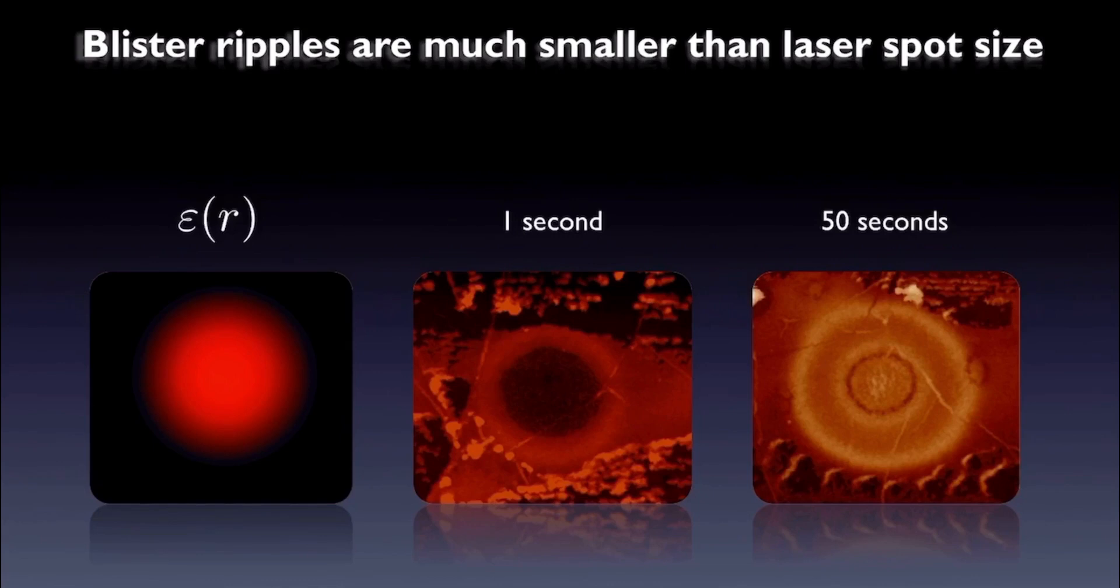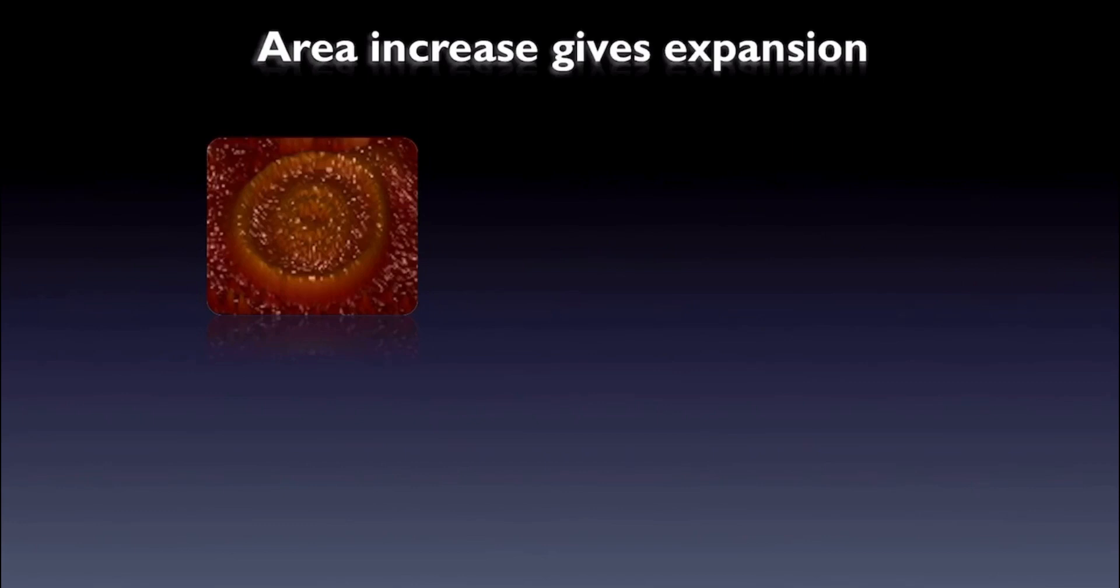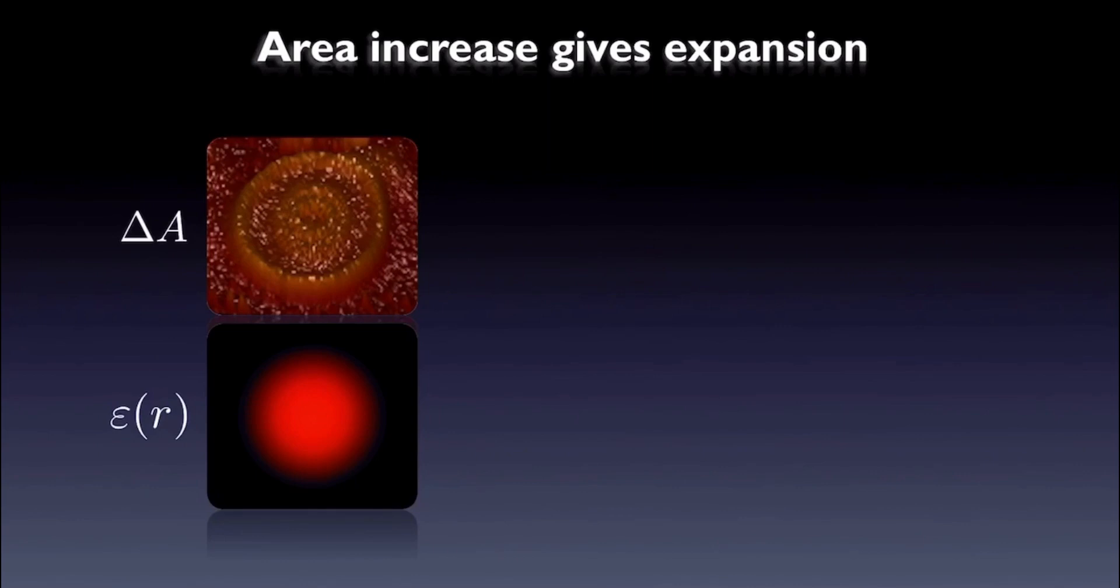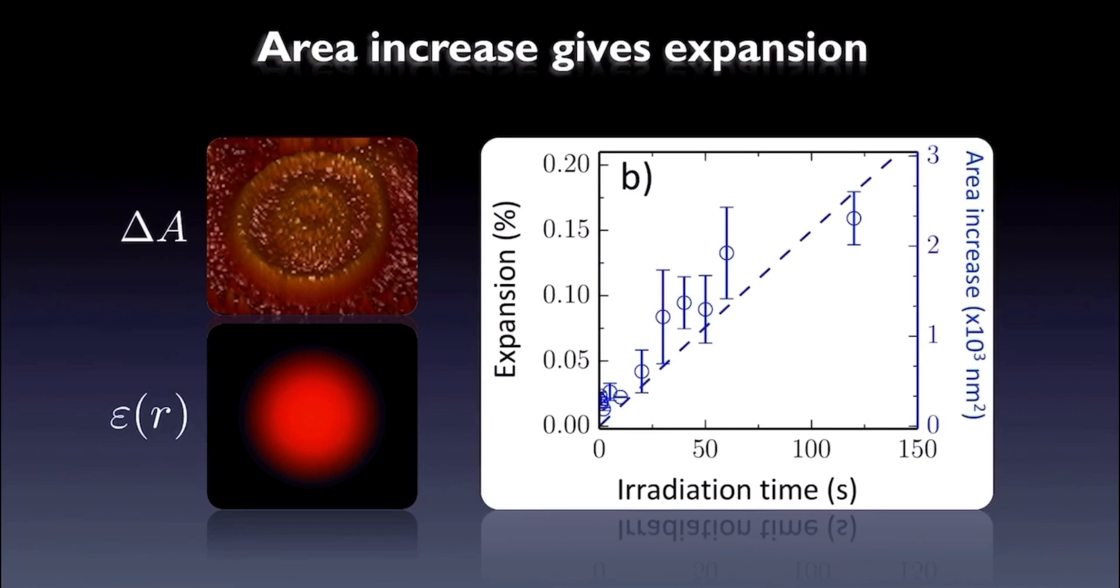But we wanted to understand also the mechanism underlying the rippling. For this, we could take the AFM profiles and measure the increase in the areas of the blisters. By assuming that the expansion is proportional to the laser intensity profile, we could transform the area increase into the maximum expansion at the middle of the blisters as a function of the irradiation time.